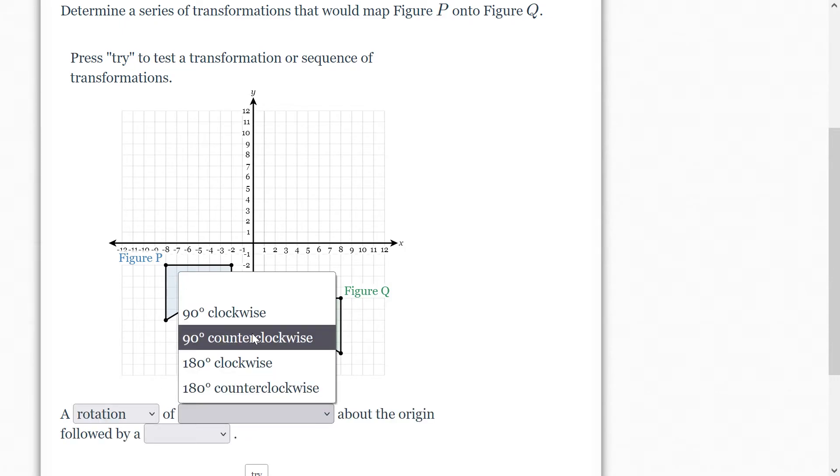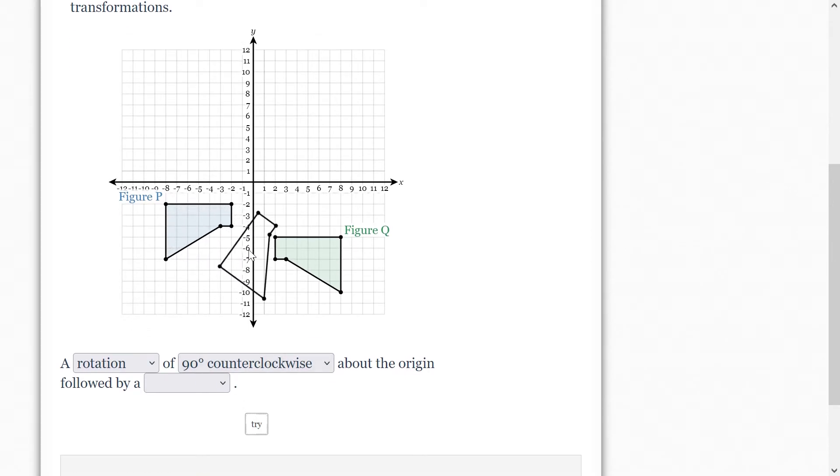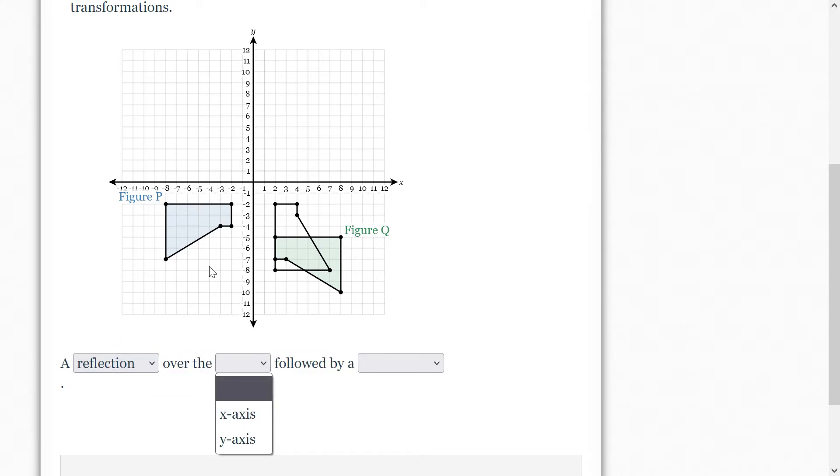Let's try 90 degrees counterclockwise. And we could try that out. But notice we're not really facing the right way. So I think here maybe a reflection would be a better idea. And remember, going across the y-axis would flip it horizontally. So it should look something like that. And that looks pretty good.